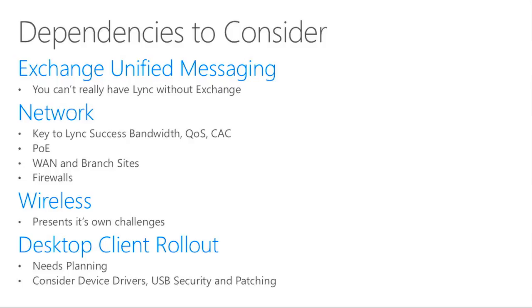The next most important and probably most complicated dependency is the network. Sometimes network teams are telecoms teams, particularly with IP telecoms, and sometimes they're separate. For business people in the room, it's about making sure the Lync project team have someone in the network team on board, and particularly making sure the network team give Lync a level footing against whatever your existing comms solution is. Quite often Lync will get away without QoS in the pilot because it uses variable bitrate codecs, but when you scale it and Lync isn't getting QoS while Avaya or Call Manager is, users get a bad experience. Ensure quality of service, call admission control, and power over Ethernet for IP phones.